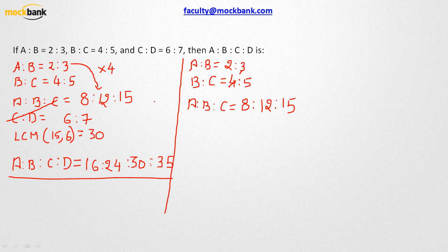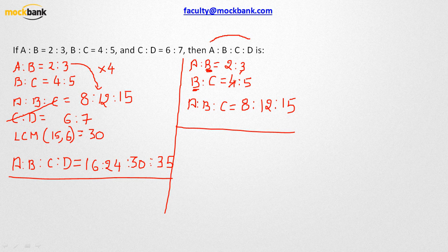The only prerequisite here is that if the first ratio ends with b, the second ratio has to start with b — that's the only condition we need to take care of. Now, suppose the question asks only what is a:d, and you are given a:b, b:c, and c:d — how do you find a:d?